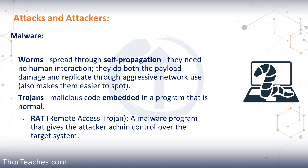The worm contains both the payload damage — whatever it's designed to do on our systems — but it also contains a part that's going to make it replicate aggressively throughout our network. It doesn't just want to infect one system; it wants to infect as many as possible. But that aggressive self-propagation also makes it much easier to spot.